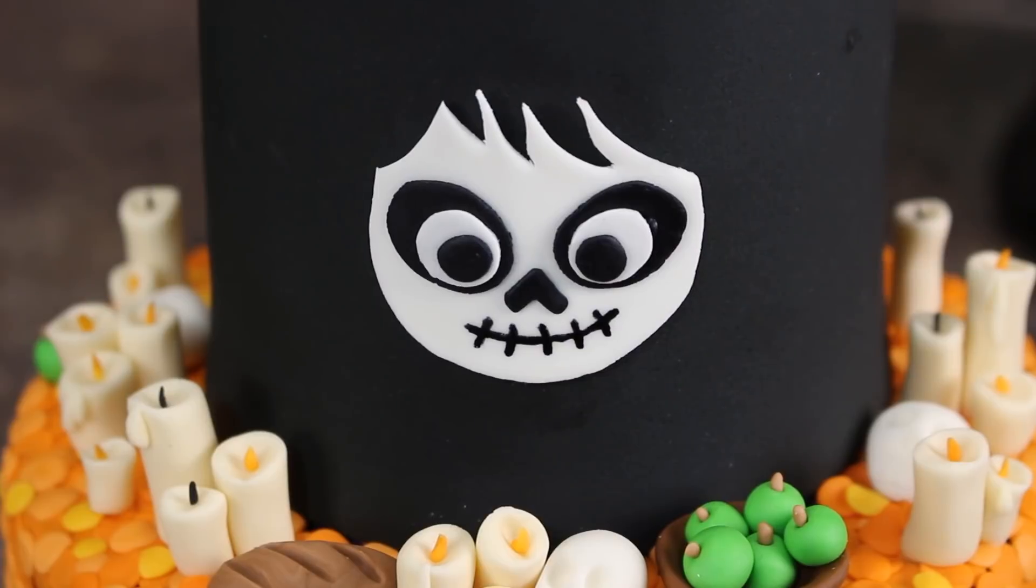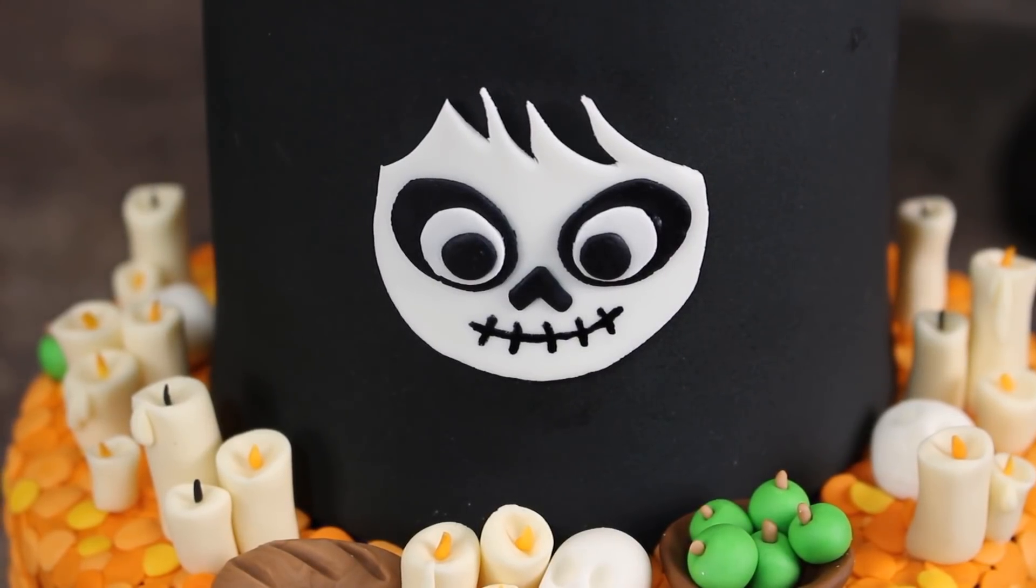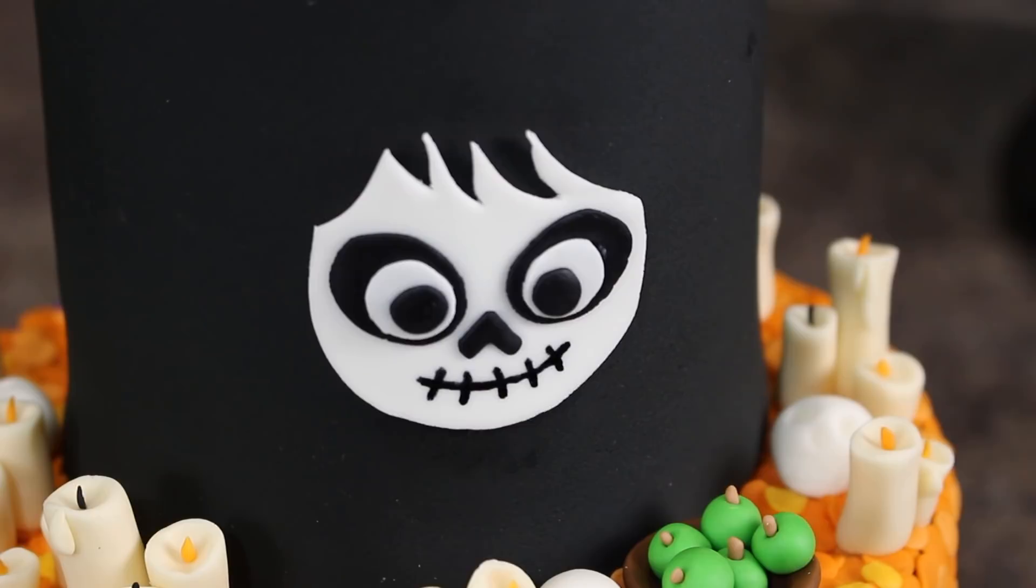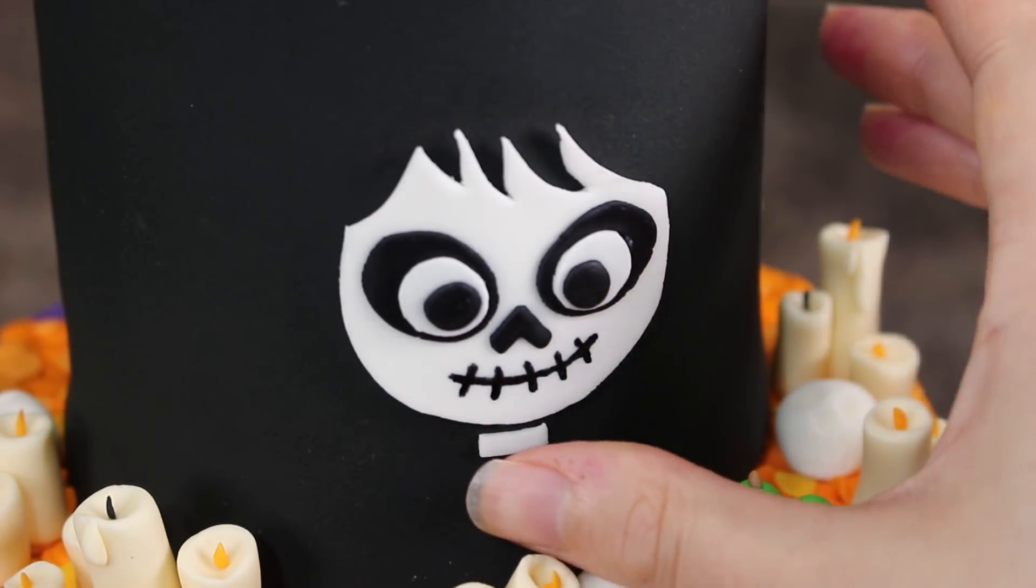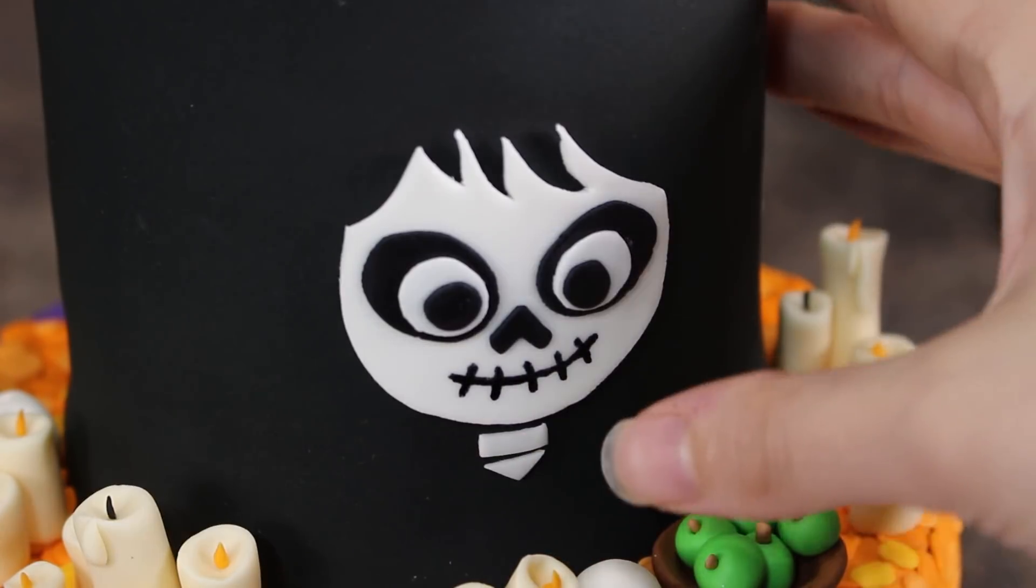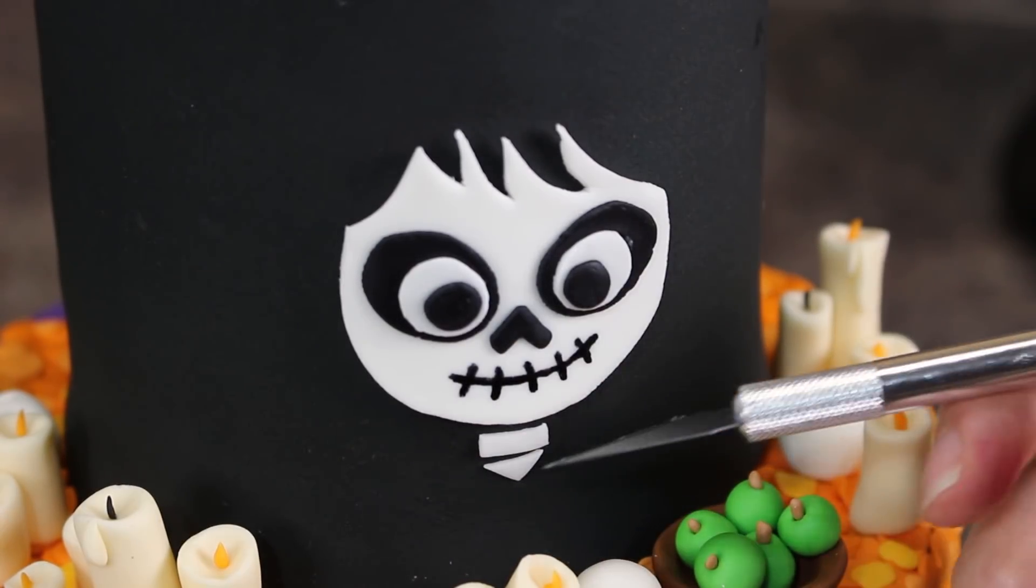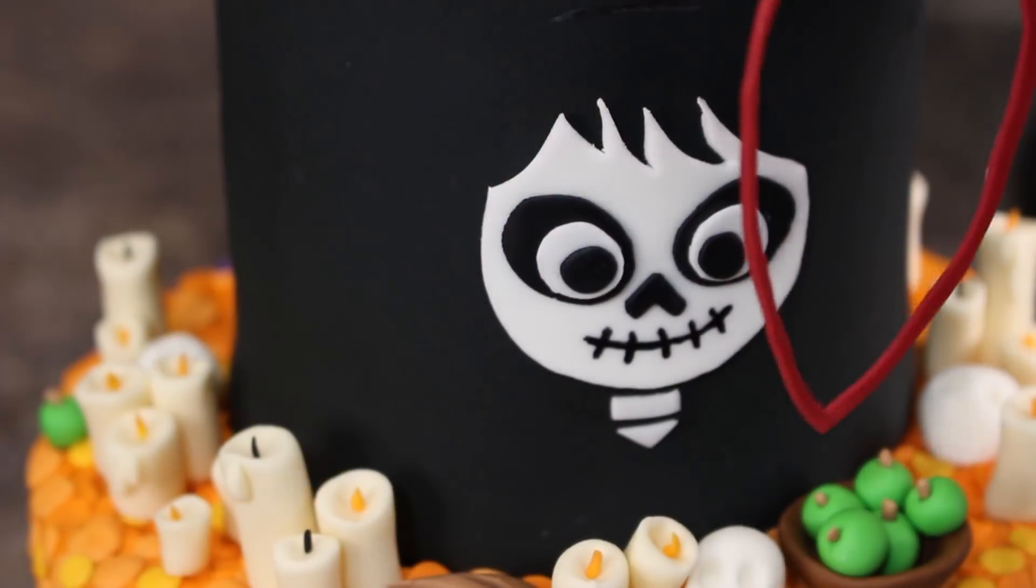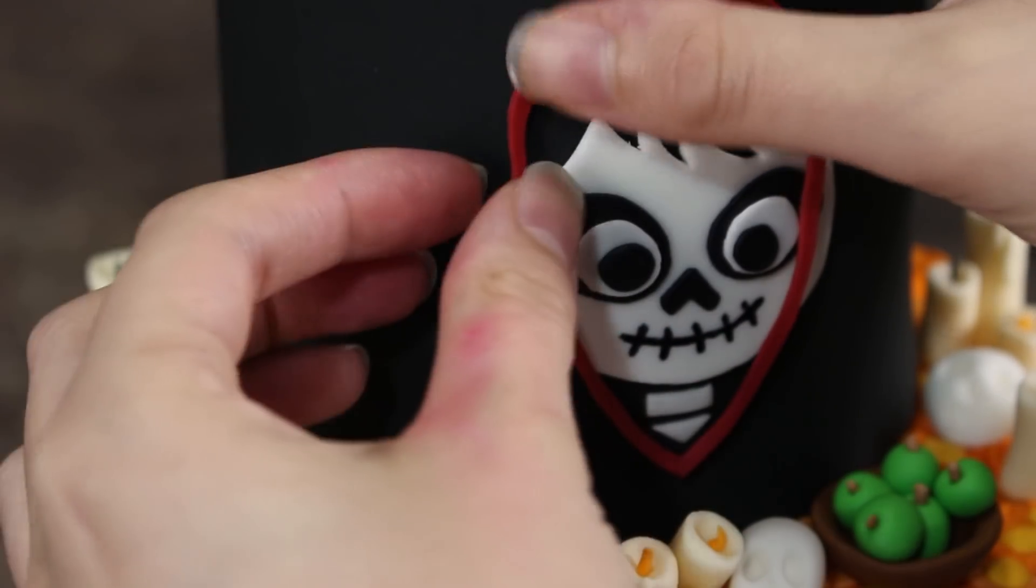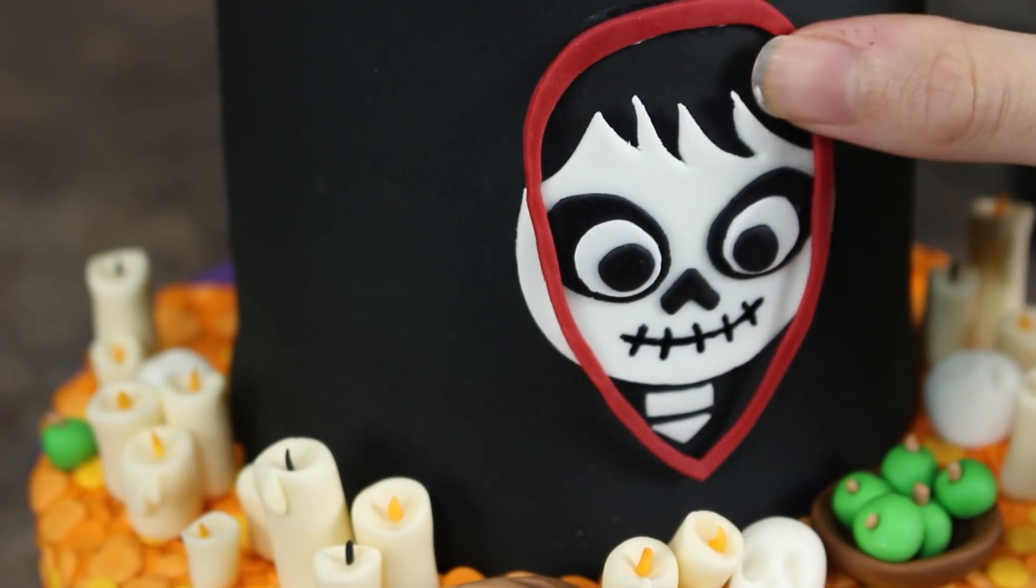I drew on his smile using some black food coloring and my fine tip paintbrush and then I also added the little neck pieces underneath. Lastly again using my template I cut out this red rim of fondant and then I added that in place using a little bit of shortening so it looks like his hoodie.